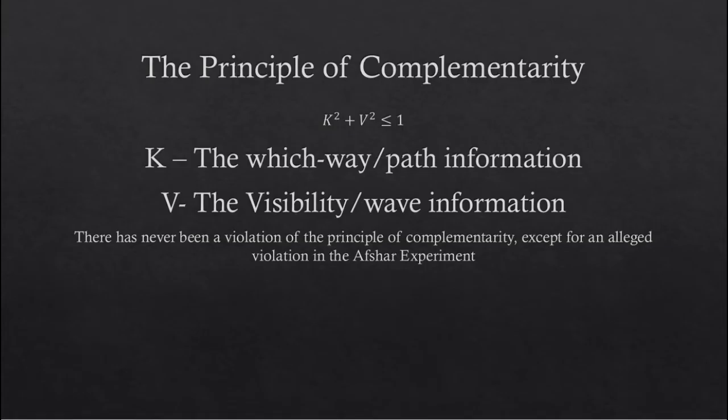Complementarity dictates that the wave and particle properties of matter and radiation cannot be observed simultaneously beyond this inequality. The inequality associated with the principle of complementarity, as seen here, K² + V² ≤ 1, is dependent upon two parameters.